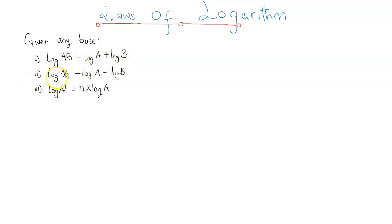In the second one, the logarithm of a quotient, quotient is another word for division, so we can see a divided by b. So the logarithm of a quotient is equal to the difference of individual logarithms.